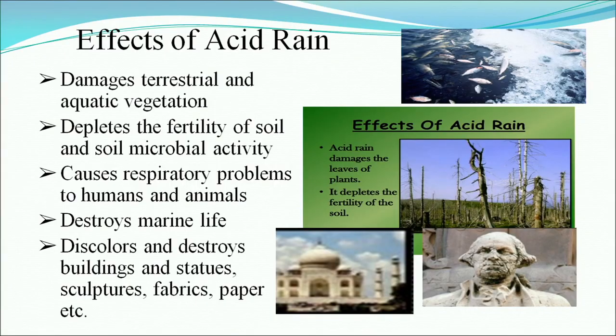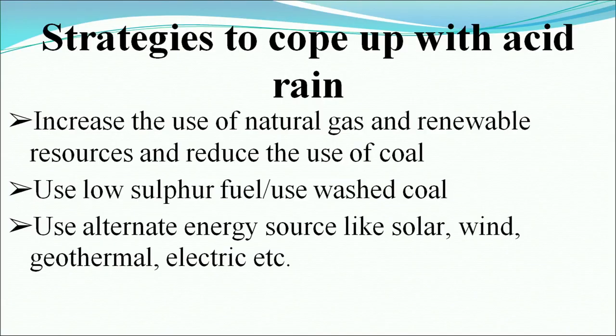Effects of acid rain: they damage terrestrial and aquatic vegetation, deplete the fertility of soil and soil microbe activity, cause respiratory problems, destroy marine life, and discolor or destroy buildings, statues, and cultural structures. Strategies to cope with acid rain include: increase the use of natural gas and renewable resources and reduce the use of coal; use low-sulfur fuel; use washed coal; or use alternative energy sources like solar, wind, or geothermal energy.